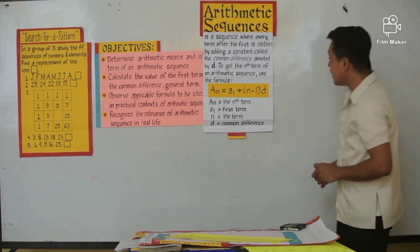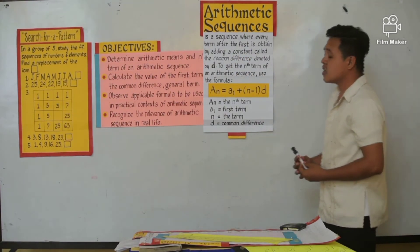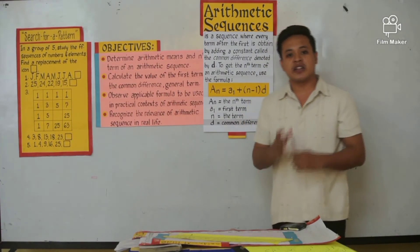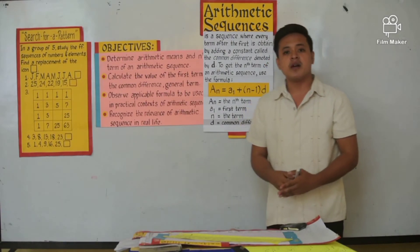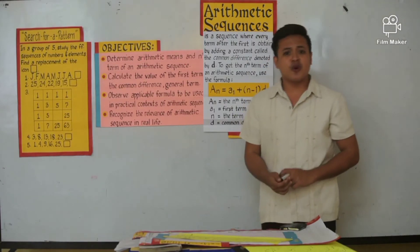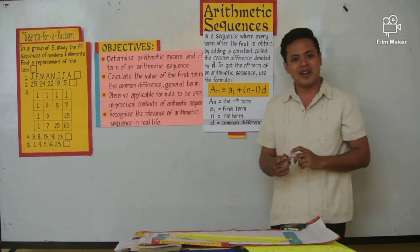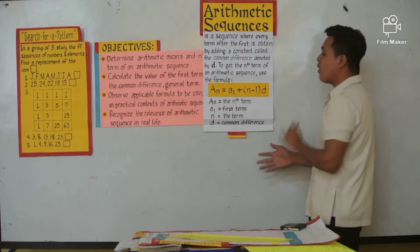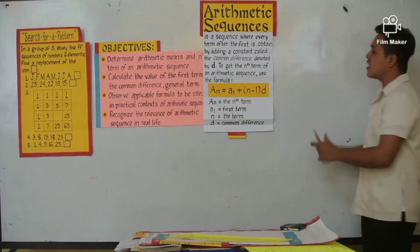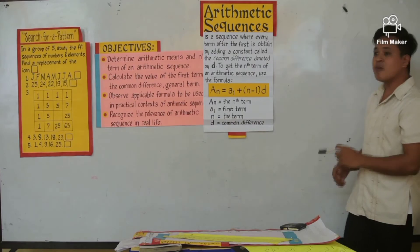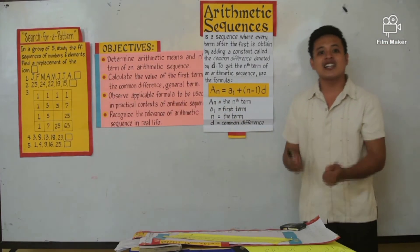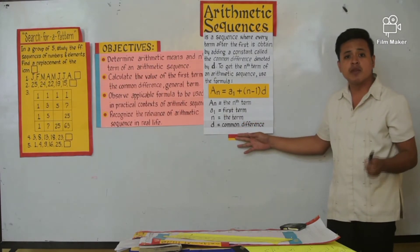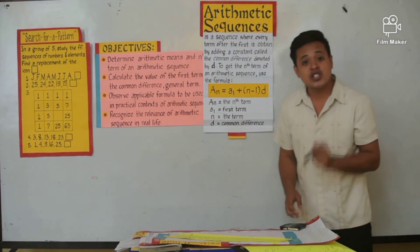That constant term we add to each term in order for the sequence to continue — that is the common difference, denoted by D. To get the nth term of an arithmetic sequence, we will use this formula. What if we are going to ask for the 64th term, the 100th term, or the 200th term? Are we going to list them one by one? That is how this formula will be used. The formula is: a sub n equals a sub 1 plus n minus 1 times D, where a sub n is the nth term, a sub 1 is the first term, n is the position of the term, and D is the common difference.